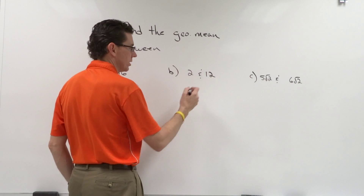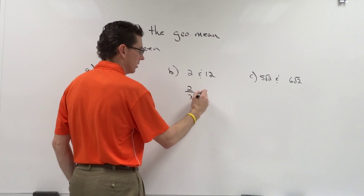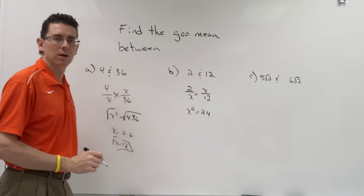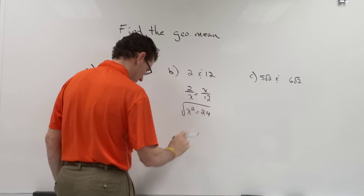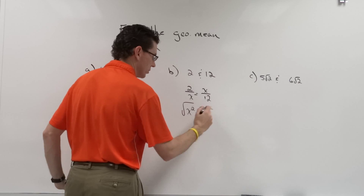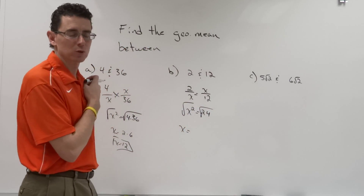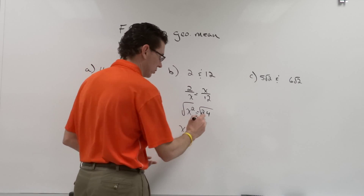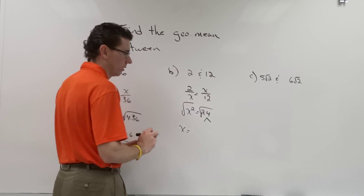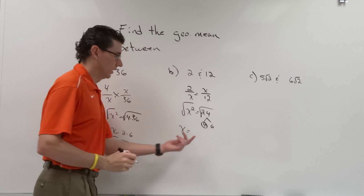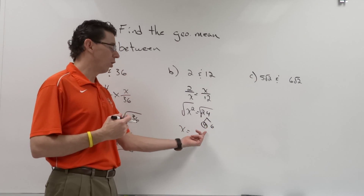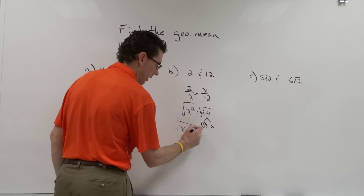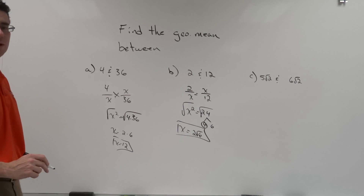Not that you couldn't multiply 4 times 36 and get 144 and take the square root, but if you get one term that is a perfect square and one that isn't, you'll have to break it down anyway when you simplify — so why not leave it that way. Let's look at the next one: what's the geometric mean between 2 and 12? So I'm going to set 2 over x equals x over 12, cross multiply to get x squared equals 24. Take the square root of both sides — 24 is not a perfect square, so I simplify: 24 = 4 times 6, square root of 4 is 2, and 6 stays under the radical. So the geometric mean between 2 and 12 is 2 root 6.